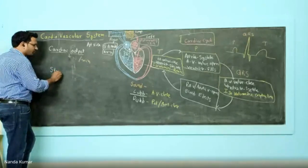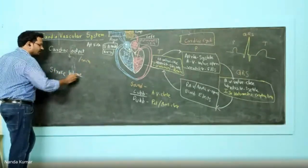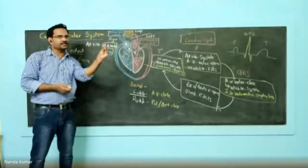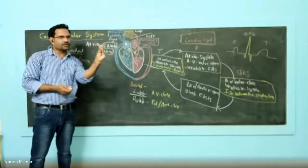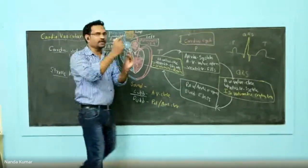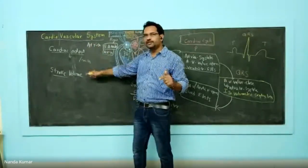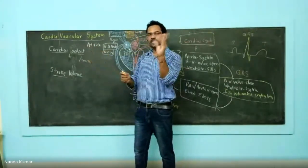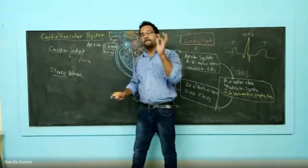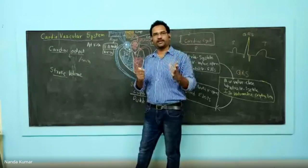There is one more term known as stroke volume. A stroke in this sense is nothing but a contraction — this is called a stroke. With every contraction, whatever volume is coming out is called stroke volume. Remember there is a difference between these two: cardiac output means per minute how much blood is coming out, whereas stroke volume is per stroke — with each and every stroke, how much amount is coming out of the heart.